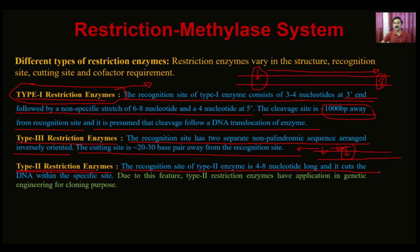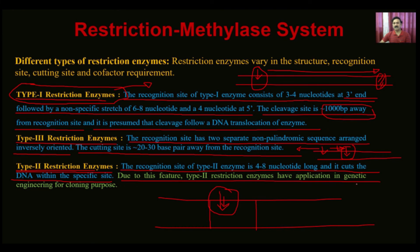Type 2 restriction enzymes have a recognition sequence of 4 to 8 nucleotides and cut the DNA within the specific recognition site. This means you know precisely where the restriction enzyme will cut. Due to this feature, Type 2 restriction enzymes have application in genetic engineering for cloning purposes. If the cut is non-specific — like 20 to 30 or 1000 base pairs away — the enzyme is not suitable for cloning.